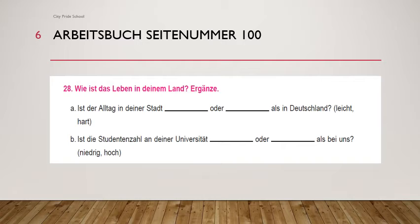A: Ist der Alltag in deiner Stadt — blank — oder — blank — als in Deutschland? Alltag is daily routine and the adjectives given are leicht and hart. Leicht means easy and hart means difficult or hard. The answer: is the daily routine in your city easier or harder than in Germany? Leicht comparative form is leichter — normal, only -er is added. But hart is one-syllable, so with umlaut: härter.